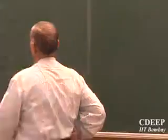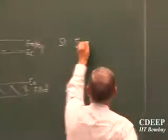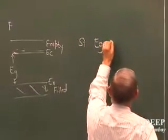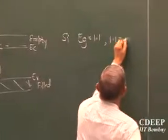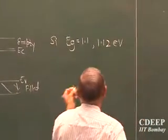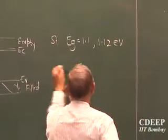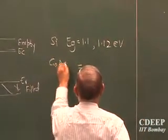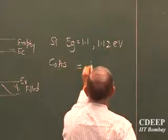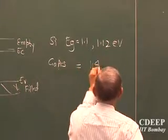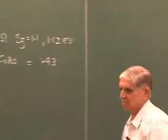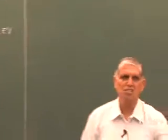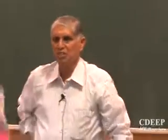The typical value of bandgap for silicon is 1.12 electron volts. For gallium arsenide, it is 1.43 electron volts, and depending on the structure, this number varies.